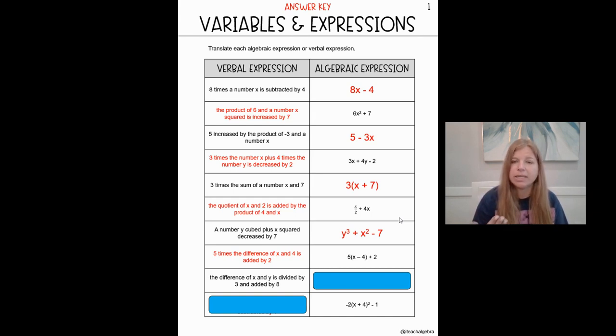Now, when we're translating and we see division, we want to make sure we don't use the division symbol. What we want to do is we want to do exactly what we saw up here with the quotient of x and 2. Division gets put in fraction form. So I'm looking at x minus y over 3, right? Divided by 3. My denominator would be 3. And then outside of that part of the expression, added by 8.